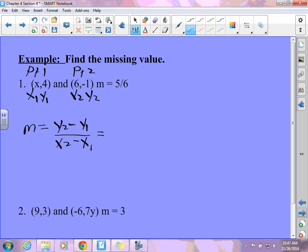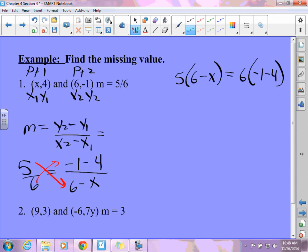So, I'm going to go 5 over 6 equals my y2 is negative 1 minus 4 over 6 minus x. And you'll notice it's not as easy as you think it is. It's just like, whoa. That's really tricky. So, what you're going to do on this is you're going to do something called cross products. And you're going to go 5 times 6 minus x equals 6 times negative 1 minus 4. So, 5, I'm going to do a little order of operations there. And then I'm going to distribute. So, I get 30 minus 5x equals negative 30.